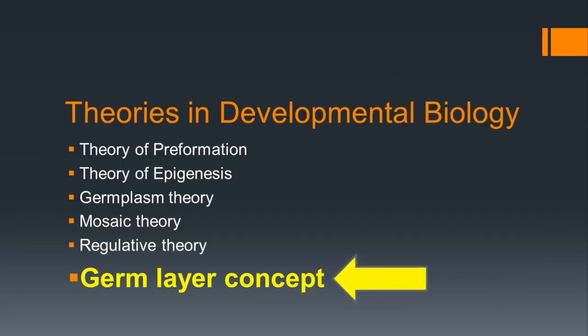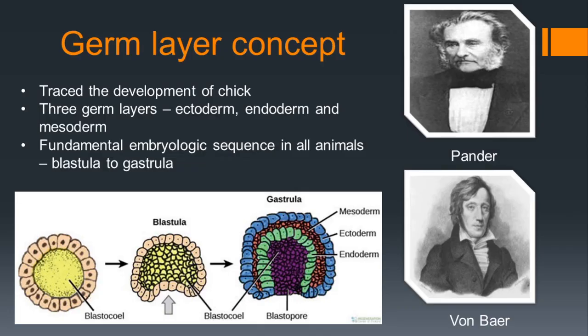The germ layer concept is based on the contributions of two scientists, Pander and von Baer. Pander traced the development of the chick and found that three germ layers are formed in the chick embryo: ectoderm, endoderm, and mesoderm. During development, the embryo passes through different stages like blastula and gastrula, and the different organs and organ systems develop from these three germ layers. This is the fundamental embryologic sequence in all animals. That concludes the theories in developmental biology.